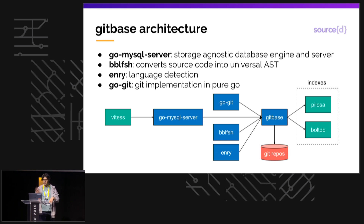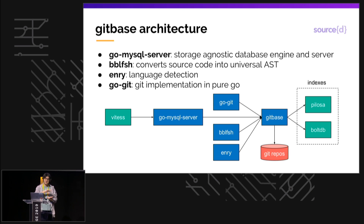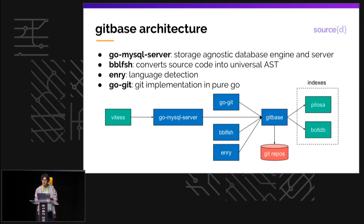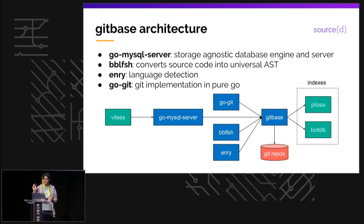GitBase is composed of several parts. We use components from outside projects, like Vitess, which is a Git clustering project — from them we use the MySQL wire protocol and the SQL parser. Then we have projects like MySQL Server, which helps you create MySQL servers in Go; go-git, a library to access Git repositories (think of it as libgit2 or JGit but written in Go); Babelfish, which deals with UASTs; and Enry, which identifies the source code language of files. Enry is a port of GitHub's Linguist. We also use Pilosa and BoltDB to create indexes.